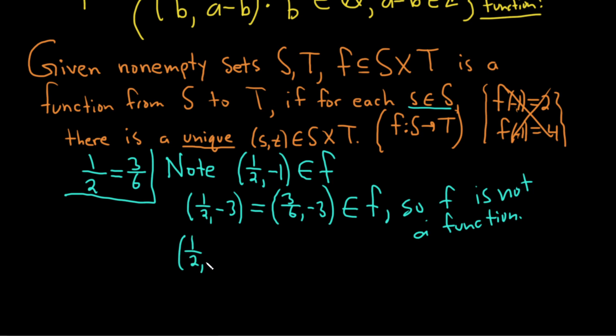You can do 1 over 2, negative 5. That's the same thing as 5 over 10, negative 5. And that's also in f, right? So now look, we've got three.